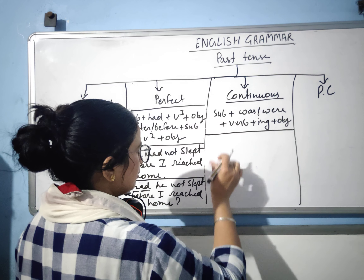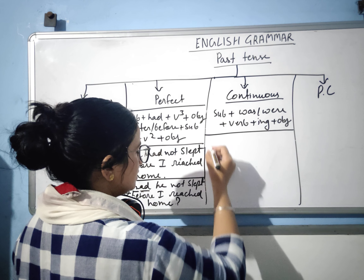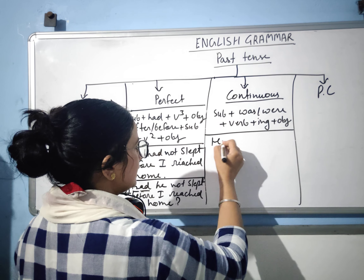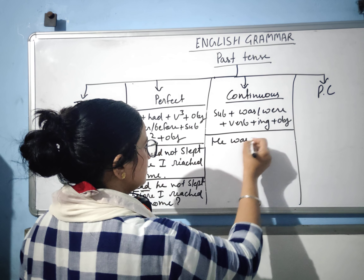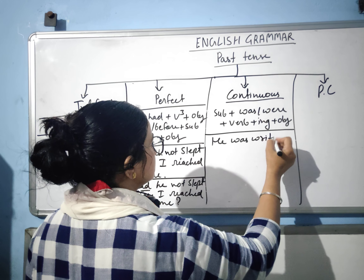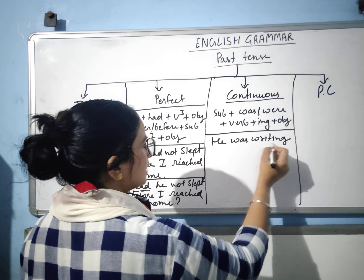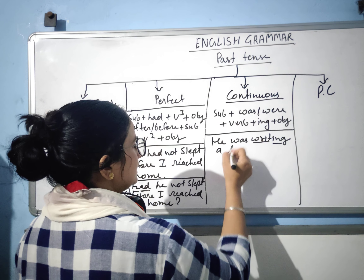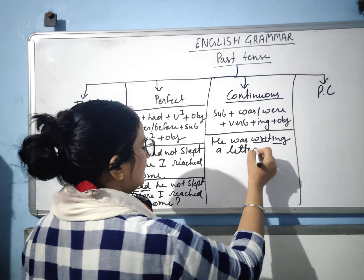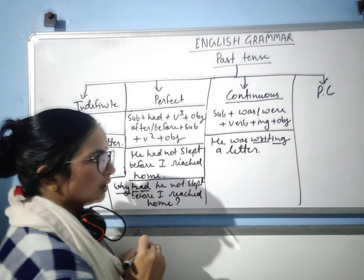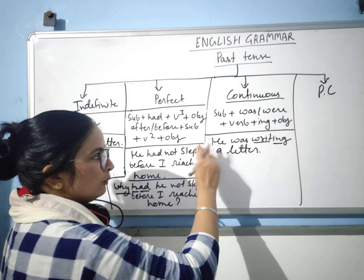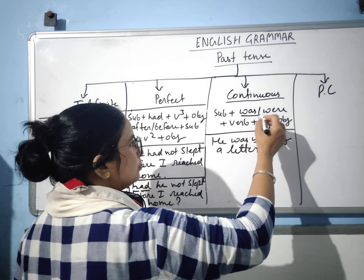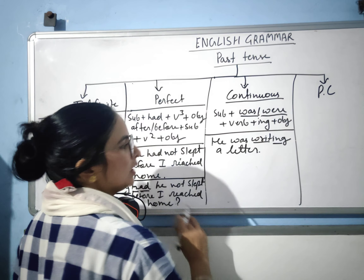Let us learn this with the help of some examples. For instance: 'He was writing a letter.' With a singular subject, you use 'was', and with a plural subject, you use 'were'. In the negative: 'He was not writing a letter.' 'Not' comes between 'was' and the verb plus ing form.